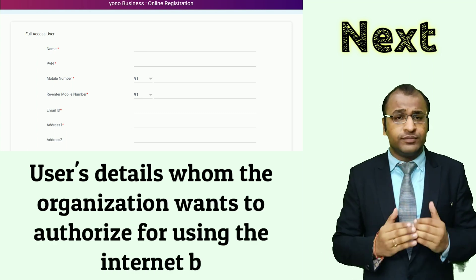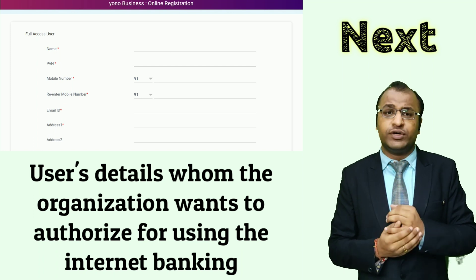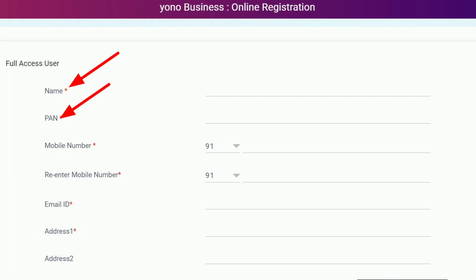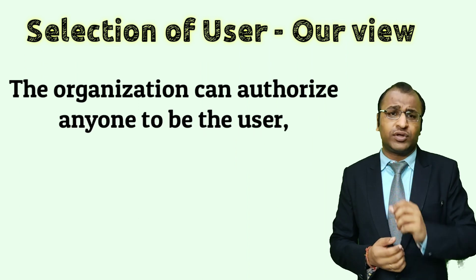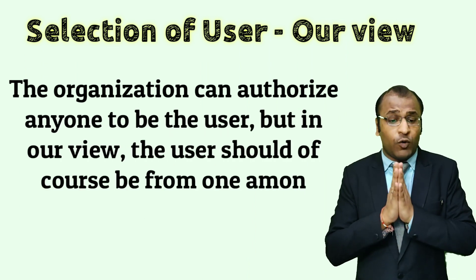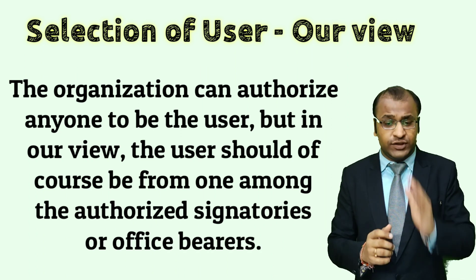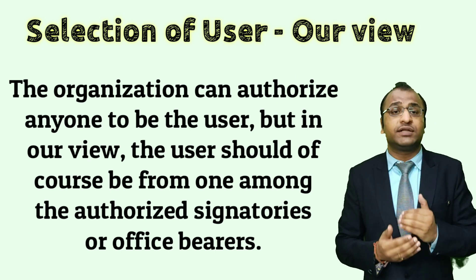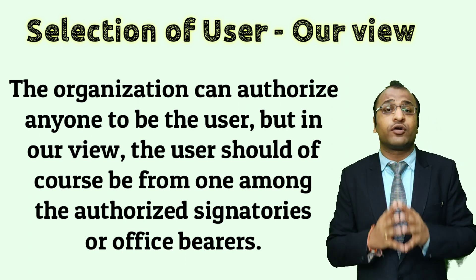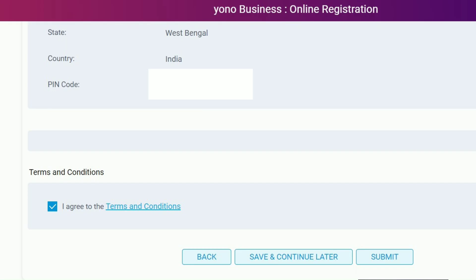Next, you need to fill in the details of the user whom the organization wants to authorize for using the internet banking facility. You need to fill in the name, mobile number, email ID, and complete address of such user. Although the organization can authorize anyone to be the user, in our view the user should of course be from among the authorized signatories or office bearers.